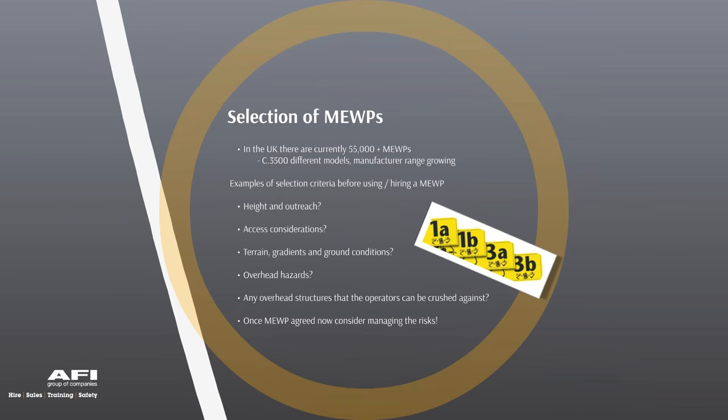In the UK there are approximately 55,000 to 60,000 MEWPs, ranging from different manufacturers, types, and models — some indoor only, some capable of going outdoors. Manufacturers are constantly developing new machines with different configurations, applications, and uses. Technology is increasingly working in the manufacturer's favour by designing MEWPs that rely on built-in safety systems. Key criteria when selecting a machine include height, outreach, access, and any overhead structures that could cause crushing.